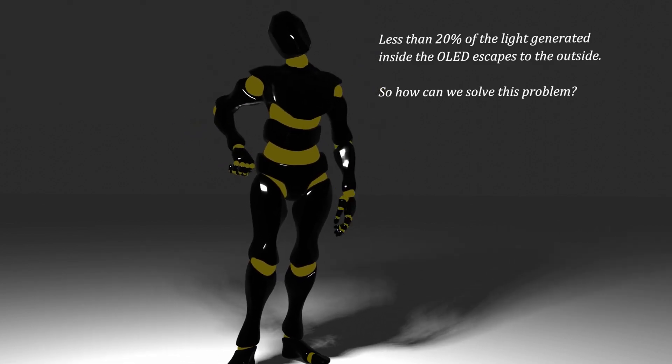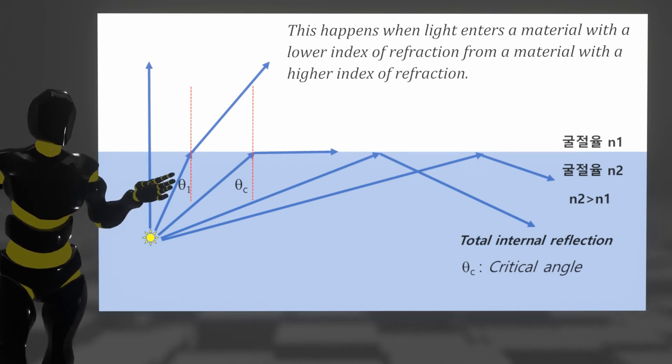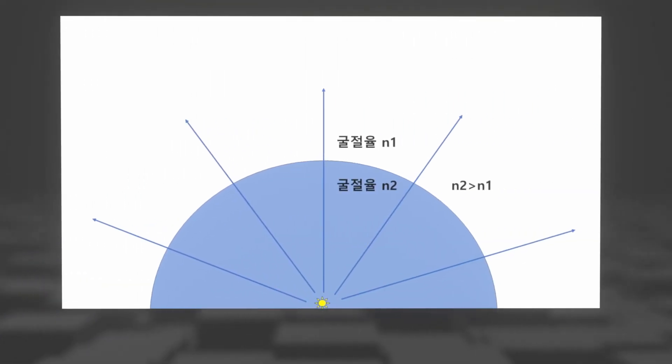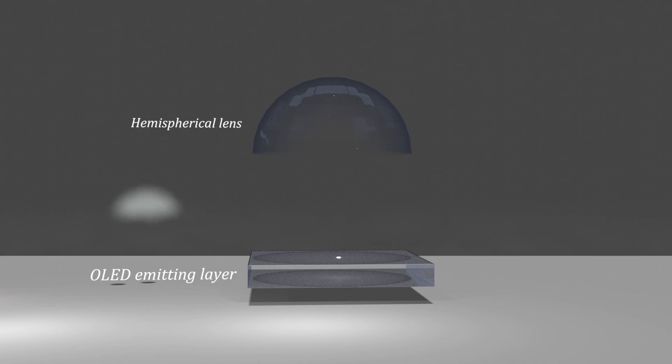So, how to solve this? The simplest method is to make the interface and the direction of light perpendicular to each other when light passes through the luminescent material and meets the air layer. If we simulate it with animation, it is as follows.